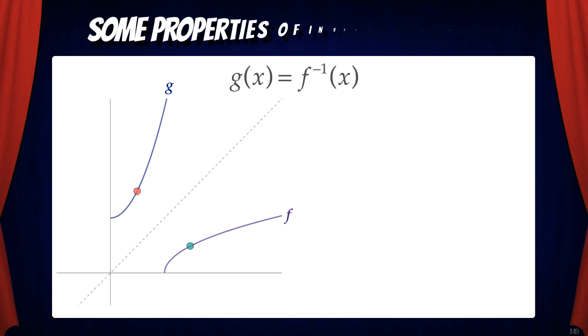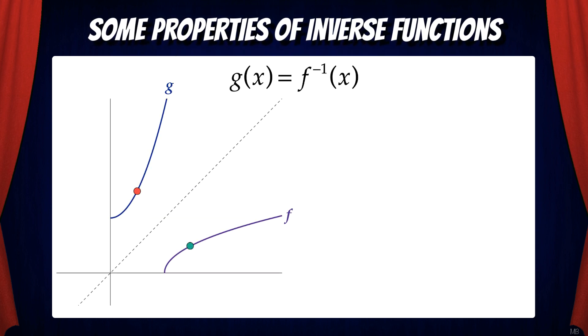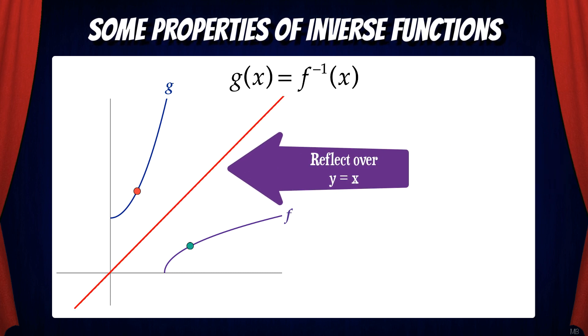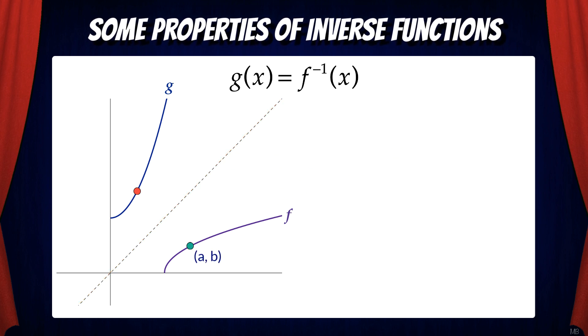Let's start by reviewing some properties of inverse functions. So if I have a function f here, and g is the inverse, note that they reflect over the line y equals x. That means if the point ab is on the graph of f, then the point ba is on the graph of g.